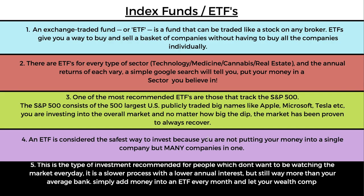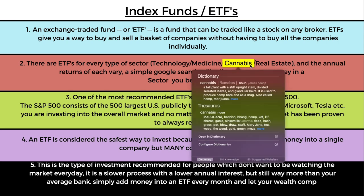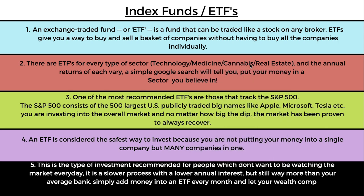There are different things to invest in in the stock market. The safest is an index fund — an ETF, or Exchange Traded Fund, is a fund that can be traded like a stock on any broker. ETFs give you a way to buy and sell a basket of companies without having to buy all the companies individually. There are ETFs for every type of sector: technology, medicine, cannabis, real estate — and the annual returns of each vary. Put your money in a sector you believe in.